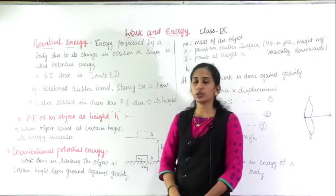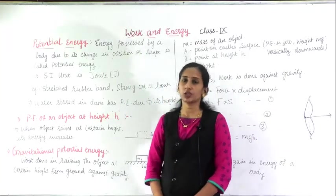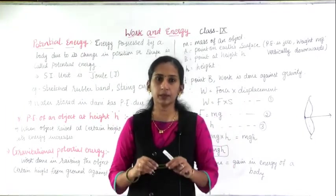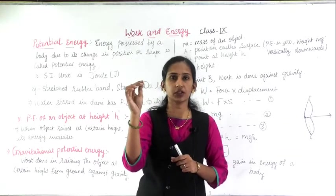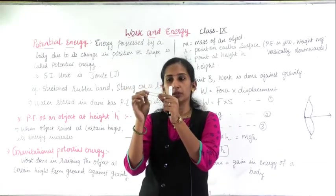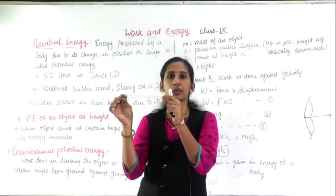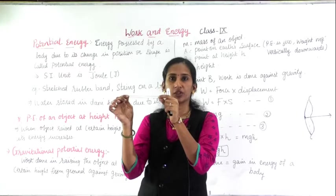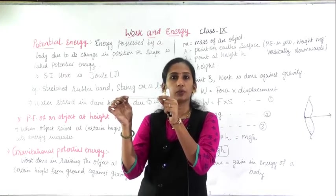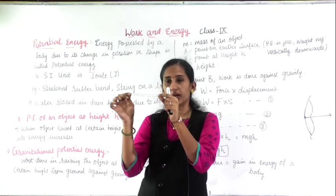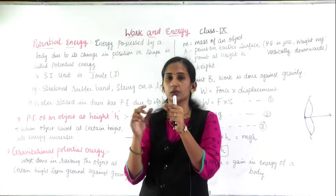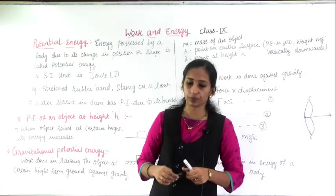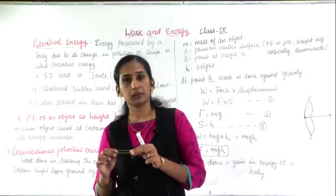or due to a change in shape, it is called as potential energy. Now here, one example I will show you — this is a rubber band. You can see it is in rest condition. If I pull it, there is a change in position also and change in shape also. Now this stretched rubber band has some energy; if I leave it, it will move. It is due to its change in position or change in shape. So that's why this rubber band can be an example.